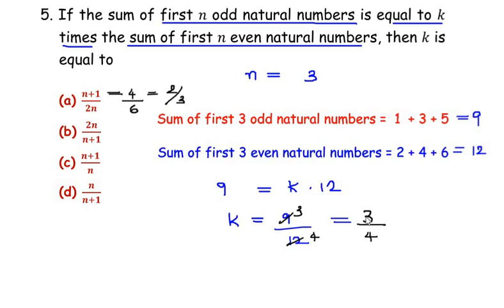Similarly, let's look at option B. 2 times 3 gives us 6 over (3+1) which is 4. This simplifies to 3/2, which is again not our answer because we need 3/4.